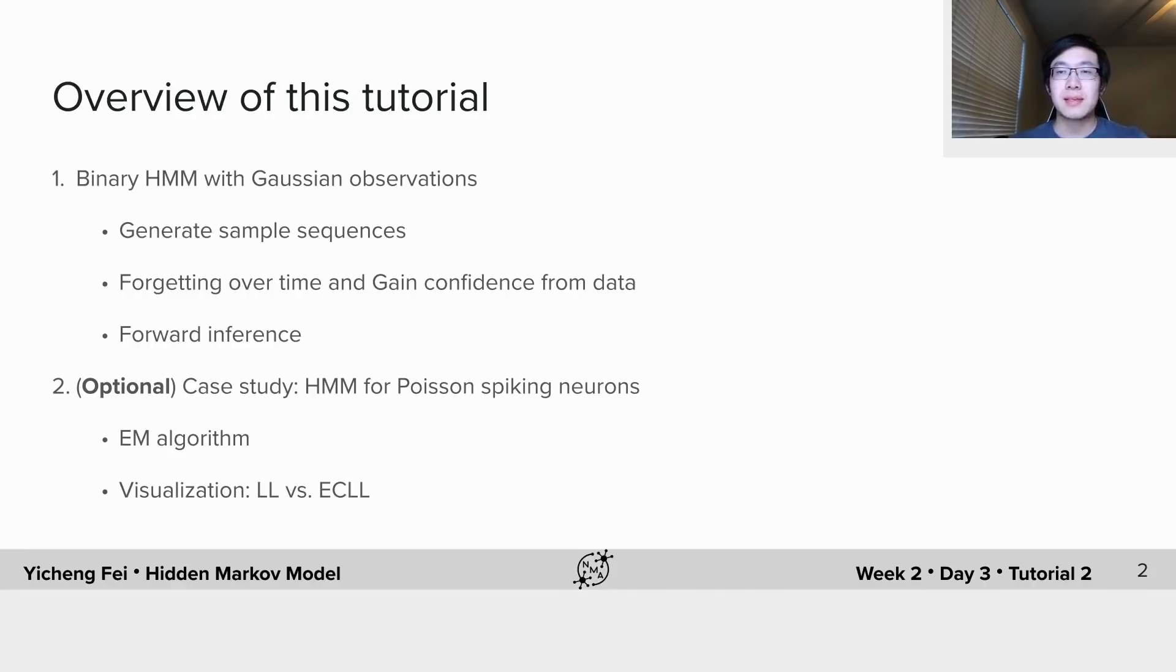Then we will go through some exercises to get a sense of how you will forget the past states over time because the world is changing, and how to increase your confidence of inference from data. After that, you will complete the forward inference of a random state sequence from noisy data it generates, and compare your inference states with the ground truth to see if the inference is correct and under which conditions it's correct.